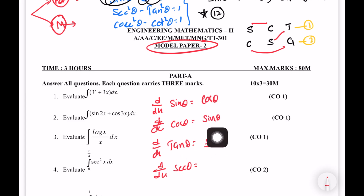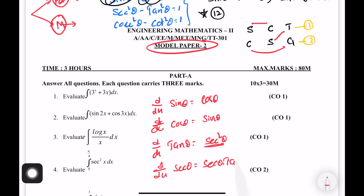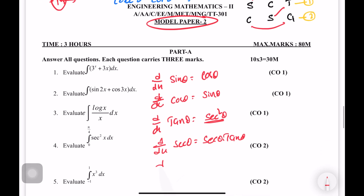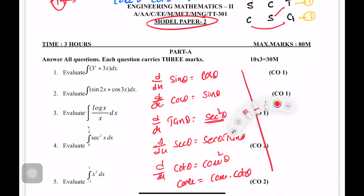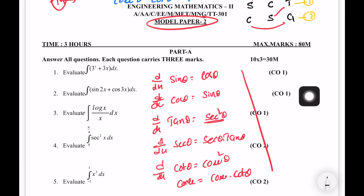d/dx of sec theta equals sec theta into tan theta. d/dx of cot theta: we can write cosecant squared theta. We can write cosecant theta into cos theta. We can write M1 formula and M2 formula — we will be able to find the M2 formulas.